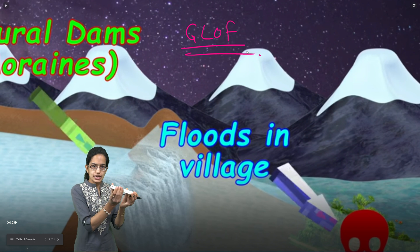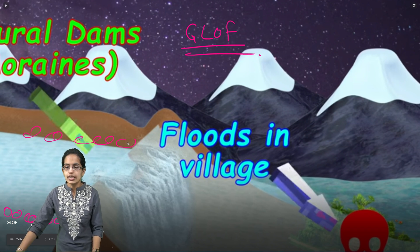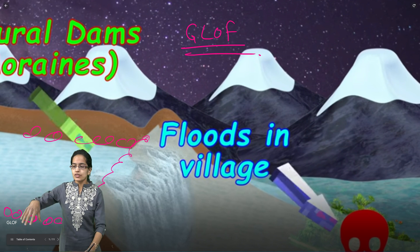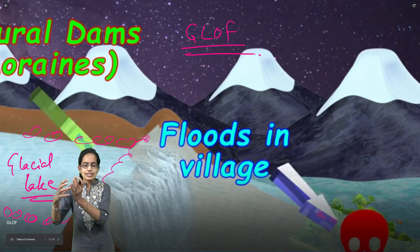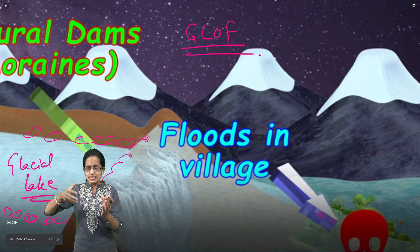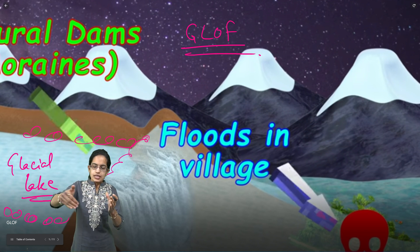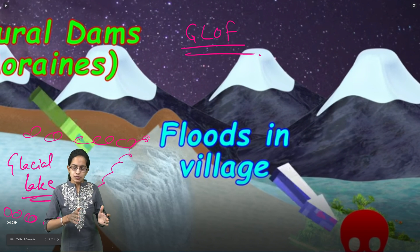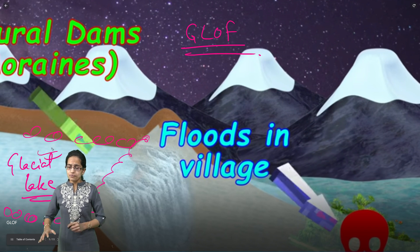As the glacier moves, boulders are deposited on the surrounding areas, creating a natural barrier or natural dam — this is where you have the glacial lake. The glacier moves forward leaving behind big boulders, sediments, and moraines on the surface, forming embankments or natural dams. These are the regions where glacial lakes are formed and water is stored.